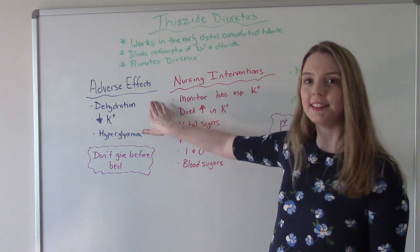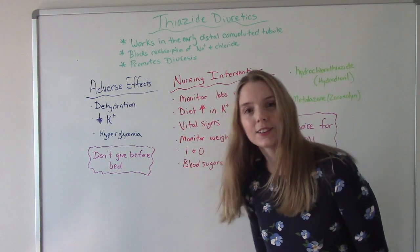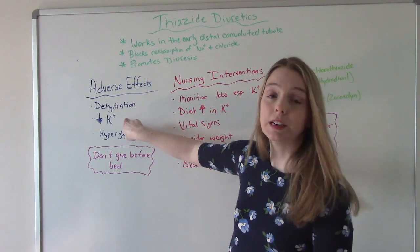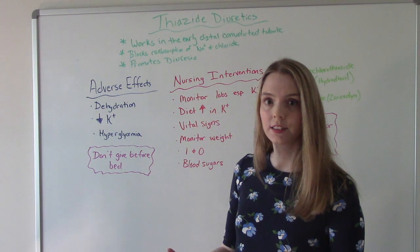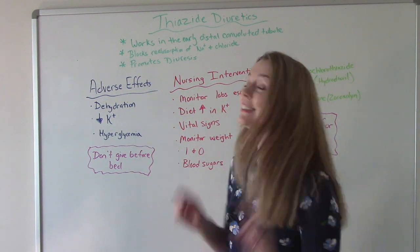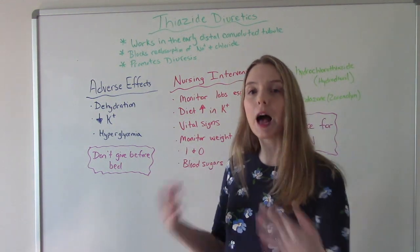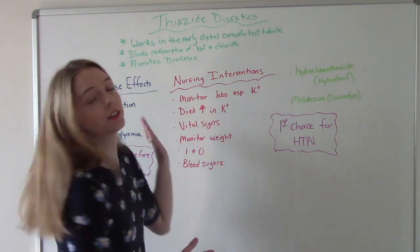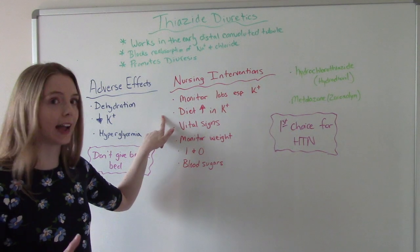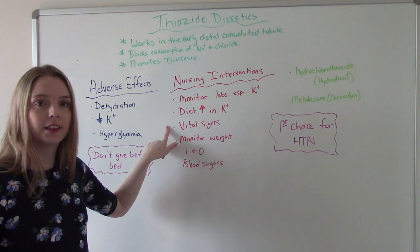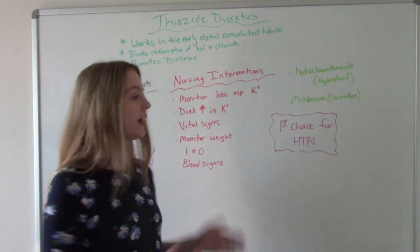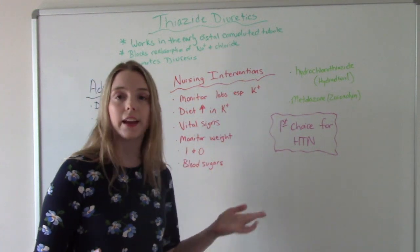The adverse effects of thiazide diuretics look similar to loop diuretics, but there are fewer of them, so they are considered a little bit safer. These include dehydration, decreased potassium because potassium is being lost, and patients are still at risk for hyperglycemia — so if your patient is a diabetic, we need to keep an eye on that. Just like loop diuretics, we don't want to give these before bed. Nursing interventions include monitoring labs — especially potassium — and encouraging a diet high in potassium. Monitor vital signs; thiazide diuretics are often used for blood pressure issues, so if the blood pressure is going down, that means they're working.